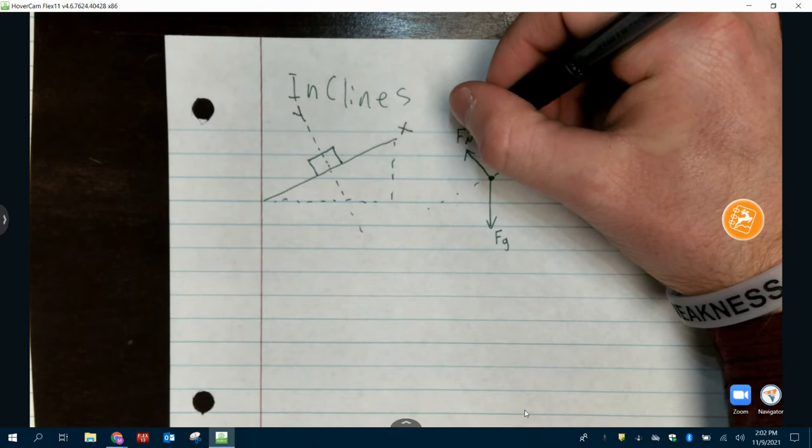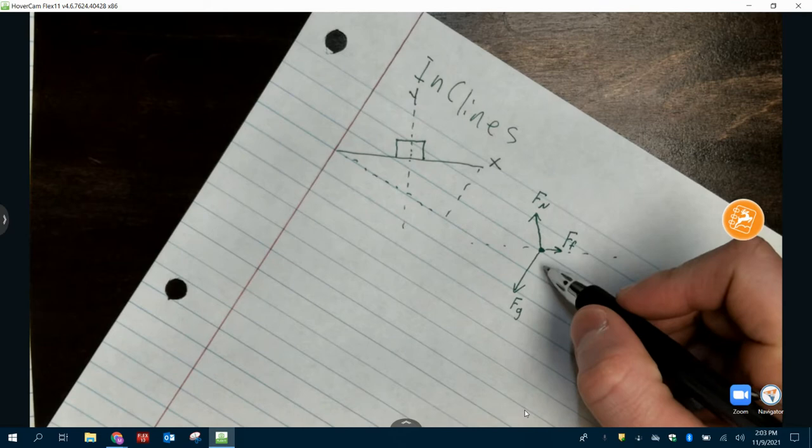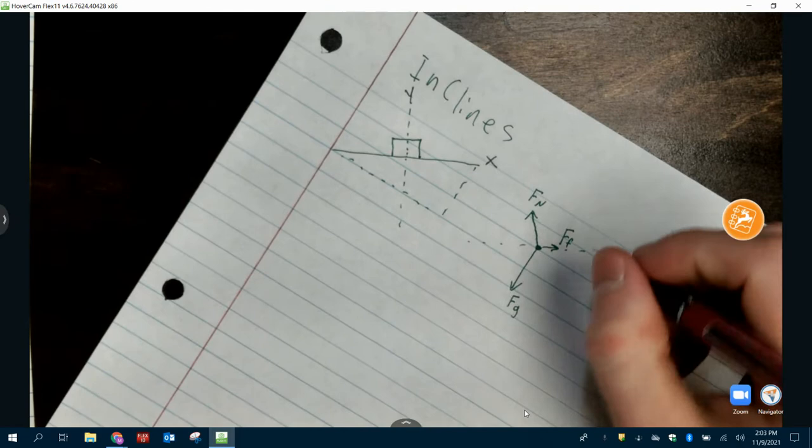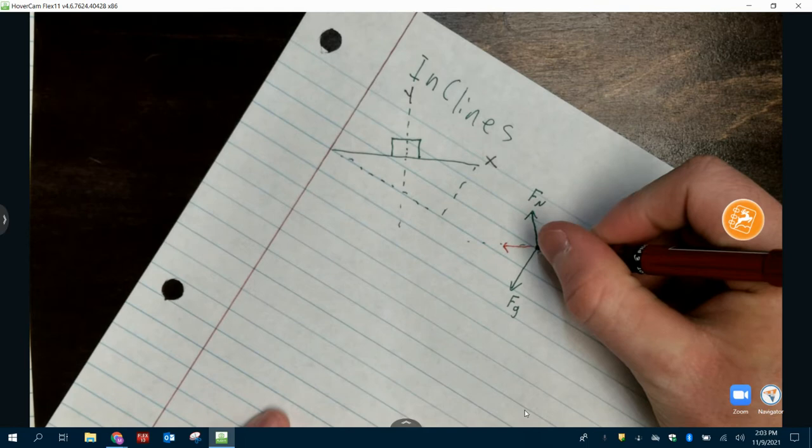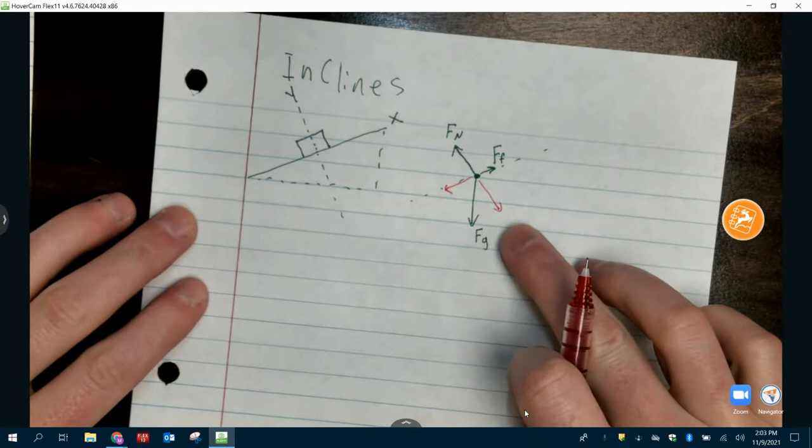So if we're thinking about it right now, Fn is already in this Y direction. Ff is already in this X direction. We just have to make Fg go in the X direction and the Y direction. So to do that, we're going to split it into two pieces. So instead of it going down this way, we're going to say, well, it's made of a piece that goes this way and a piece that goes this way. These two added together get me this same thing here.